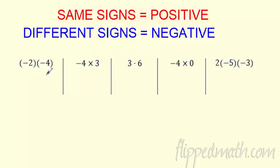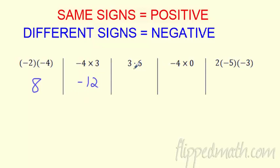So negative 2 times negative 4: first, 2 times 4 is 8, and because they're both negative, I get a positive — positive 8. Negative 4 times positive 3: negative times a positive, so the answer is negative 12. And if the signs are both positive, like 3 times 6, just do the math — that's 18. If you like your times tables, you're going to crush this section.